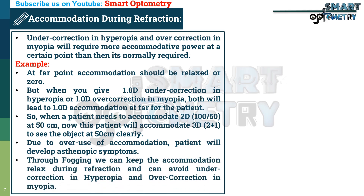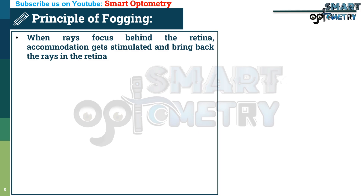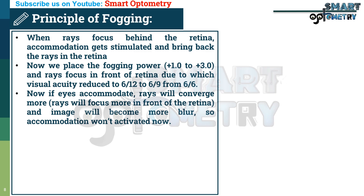Through fogging, we can keep accommodation relaxed during refraction and avoid undercorrection in hyperopia and overcorrection in myopia. The principle of fogging: when rays focus behind the retina, accommodation gets stimulated. When we place the fogging power, rays focus in front of the retina, reducing visual acuity to 6/12 to 6/9. Now if the eyes try to accommodate, they will converge rays even further in front of the retina, making the image more blurred.